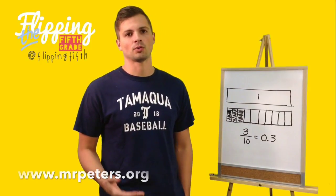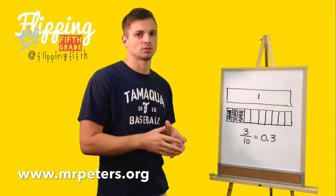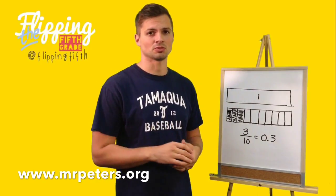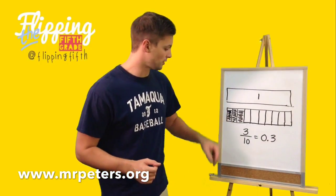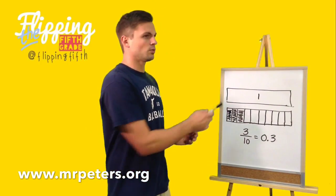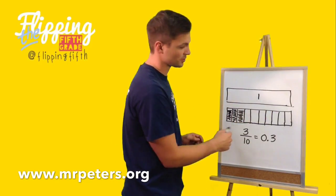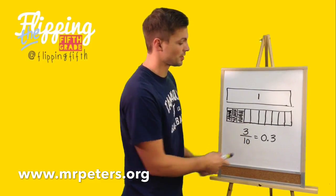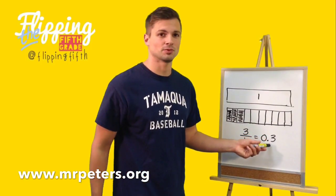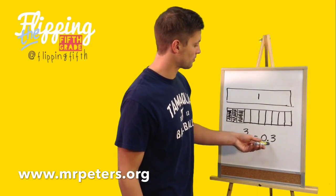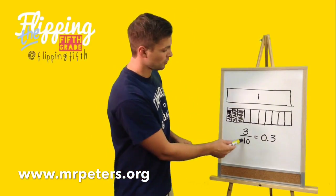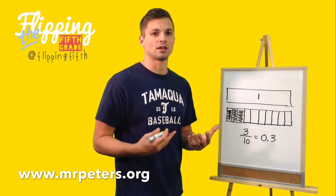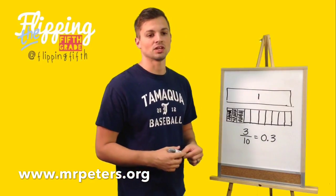You already know how to represent parts of a whole using fractions. Today we're going to talk about using them as decimals instead. First, I'd like to show you this diagram right here. We have a whole, and then we have what represents 10 slots, or a 10. Three of them are being colored in, therefore it's 3 tenths. Notice that it can also be written as a decimal, which is pronounced the same — 3 tenths. So 3 over 10 is equivalent to 0.3. That is how you can write a fraction as a decimal.